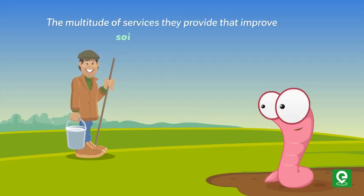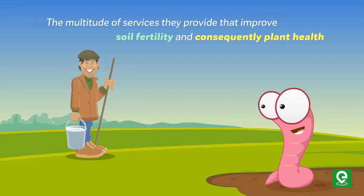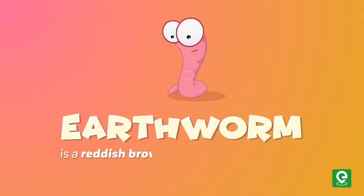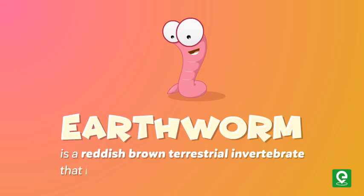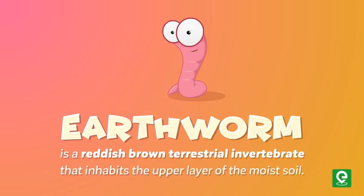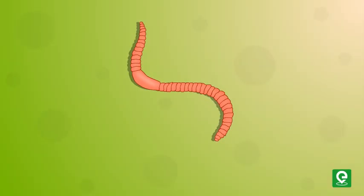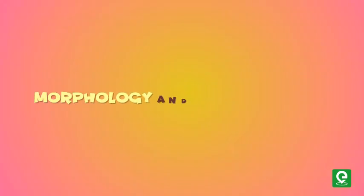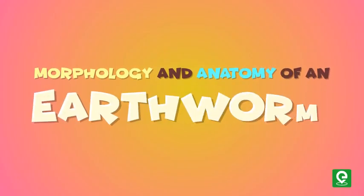Earthworms improve soil fertility and consequently plant health. The earthworm is a reddish-brown terrestrial invertebrate that inhabits the upper layer of moist soil. The common Indian earthworms are Pheretima and Lumbricus. Let's learn about the morphology and anatomy of an earthworm.